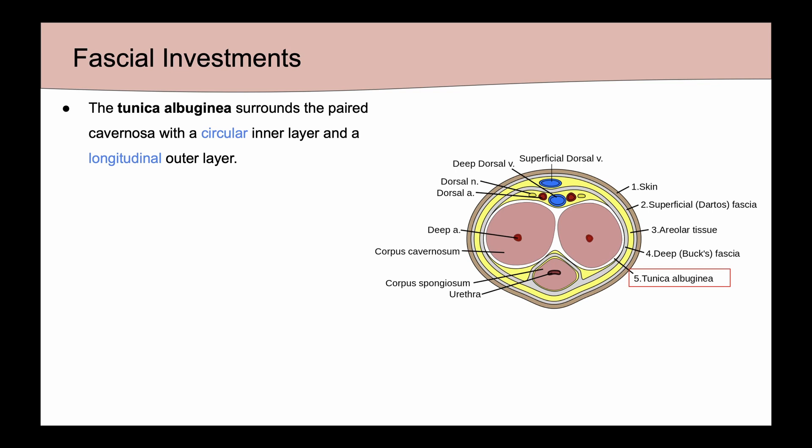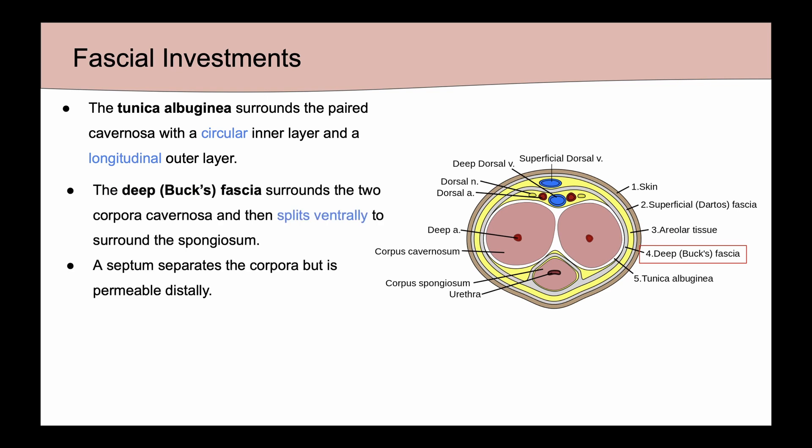We have the tunica albuginea, which surrounds the paired corpora and has a circular inner layer and a longitudinal outer layer. Next we have the deep fascia, or Buck's fascia, which surrounds the corpora cavernosa but then splits ventrally to also surround the spongiosum.